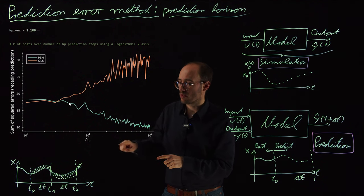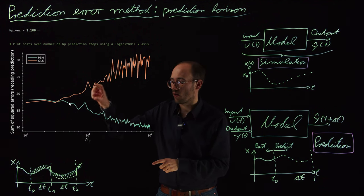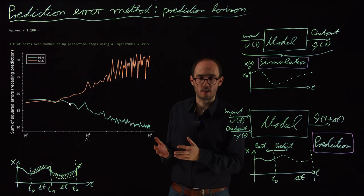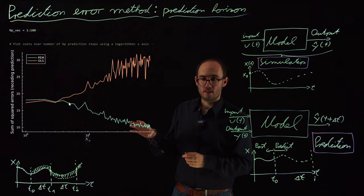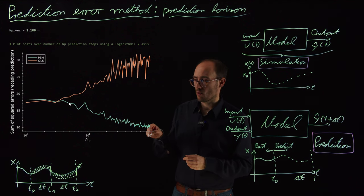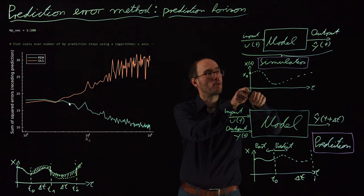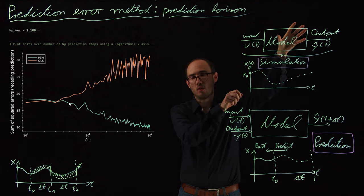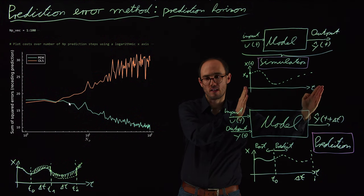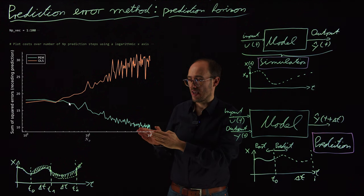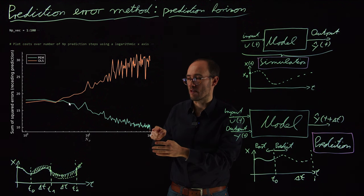However, when we reduce the number of prediction steps to a couple of single digit values, the ordinary least squares and the PEM method become actually similar. In the PEM case, it's quite easy to explain, because the PEM case we have optimized in the simulation scenario. We took the entire data, propagated it through our model, and using a solver, an optimizer, we tried to optimize the model based on the entire simulation length. That's why our PEM model had been optimized for the simulation case, for long time spans, and that's why we find its minimum here.